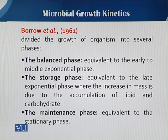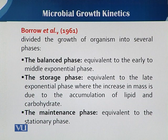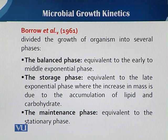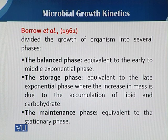In the previous module, we discussed 4 different phases of growth with respect to biomass, examining all 4 phases in detail based on the ratio between the birth and death of the cell. When we talk about different phases during batch fermentation, Baro et al. (1961) divided the growth of the organism into several phases.